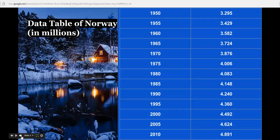This is the data table of Norway in millions. We can see that from 1950 to 2010, the growth of Norway is not as extreme. It's about 1.5 million. We'll see that a logistic growth model will model Norway's growth or population prediction better than an exponential growth model, and I'll explain later why this is possible.